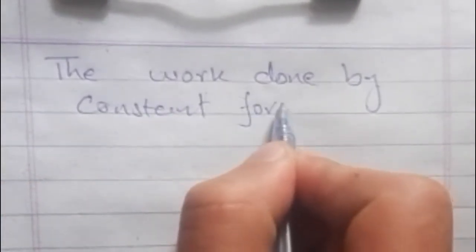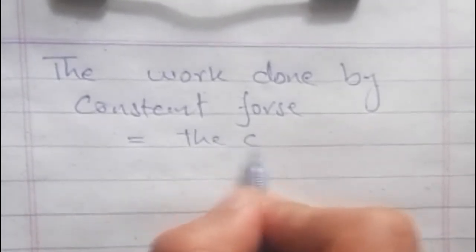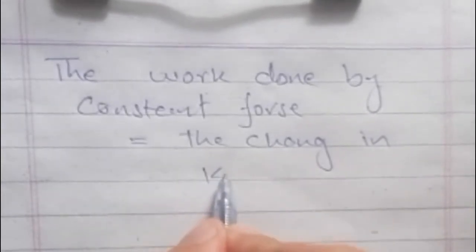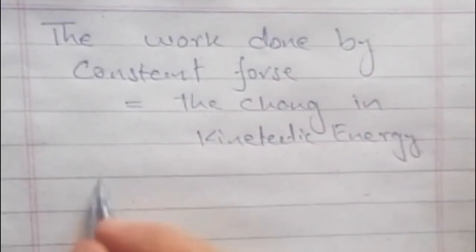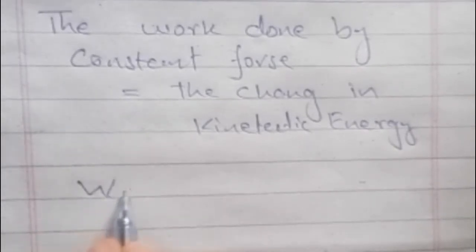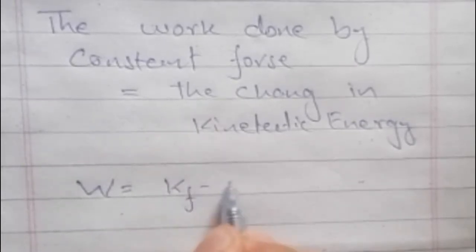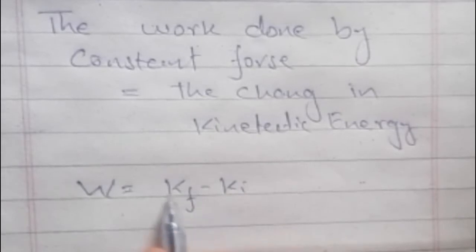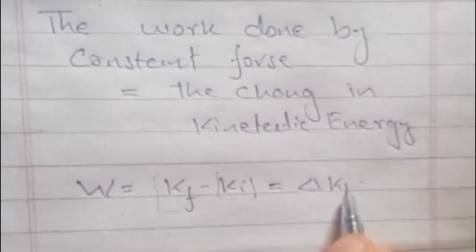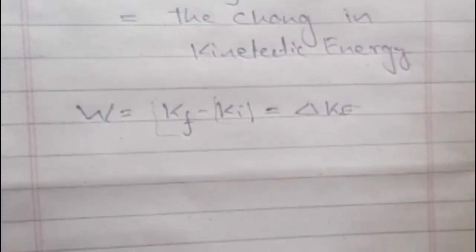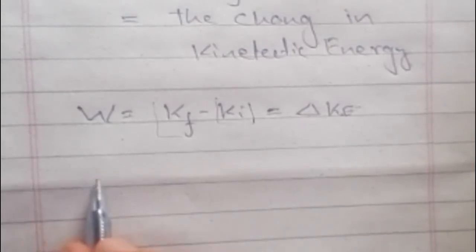Today's video is about the work done by a constant force. We are going to prove that the work done W is equal to the change in kinetic energy: W = Kf - Ki, where Kf is the final kinetic energy and Ki is the initial kinetic energy, which is equal to ΔK.